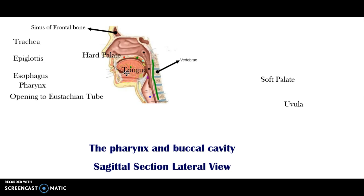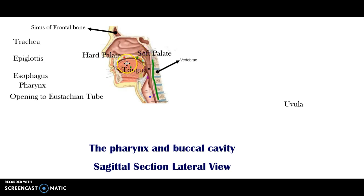If you follow your tongue backward toward what you would consider your throat, you would end up reaching a softer area — this is the soft palate. There isn't any bone above the soft palate. Many of the odors associated with your food actually enter the nasal cavity from this area, which is why if you plug your nose, you can't taste your food. As we proceed more towards the posterior, the soft palate eventually becomes a structure called the uvula. The uvula does have a specific job, and we'll look at that when we discuss the process of swallowing.